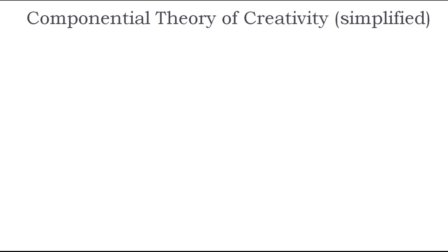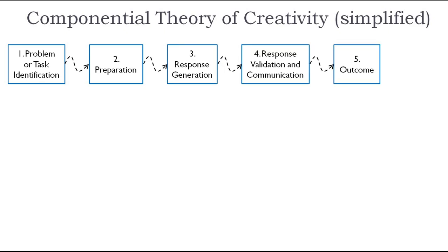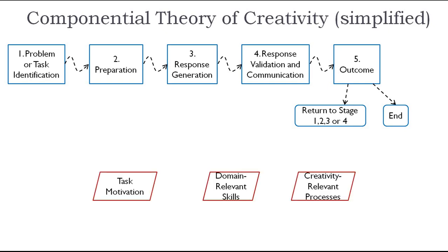We will now discuss the Componential Theory of Creativity. There are two primary concepts used in the theory. The first is that the theory nominates five primary stages of creativity or problem solving: problem or task identification, preparation, response generation, response validation, and outcome. At the conclusion of the outcome stage, the process will either end or return to a previous stage in the sequence.